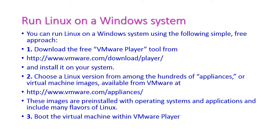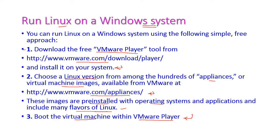Next, let us see how to install Linux on top of Windows. First, we have to download the free VMware Player from the VMware website and install it on our system. Second, we have to choose the Linux version virtual machine image from the VMware appliance website. These images are pre-installed with operating systems and applications, including many flavors of Linux. Then boot the virtual machine within VMware Player — now VMware is ready to work on the Windows operating system.